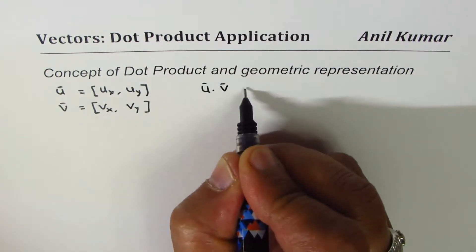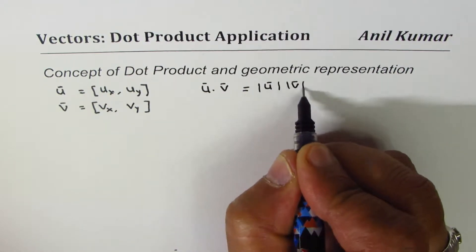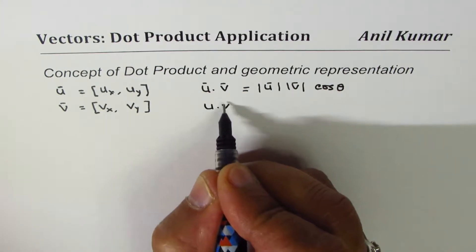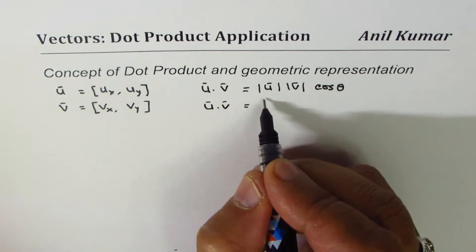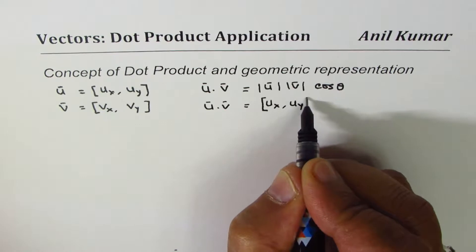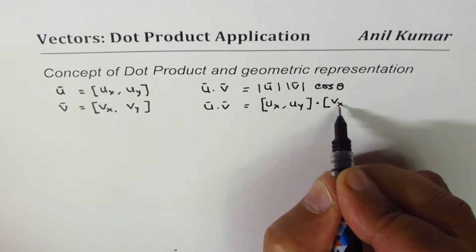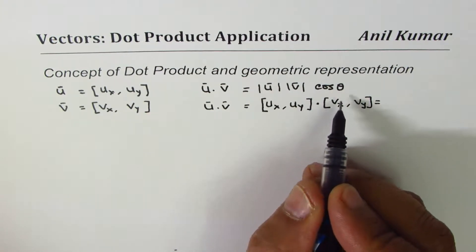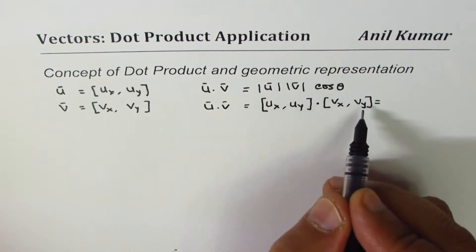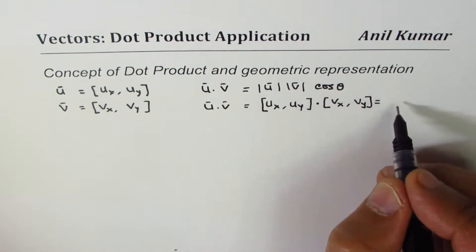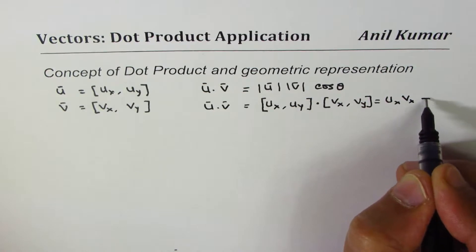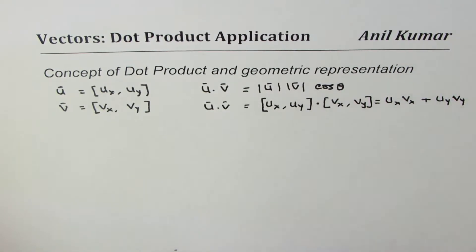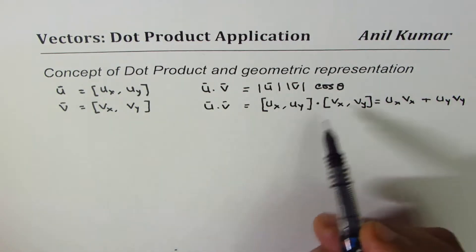When we do u dot v, we sometimes write this as the magnitude of u times the magnitude of v times cos theta, where theta is the angle between u and v. Other times, when we do u dot v, we take the dot product of the components: (ux, uy) dot (vx, vy), which equals ux*vx plus uy*vy, since x and y components are at 90 degrees.